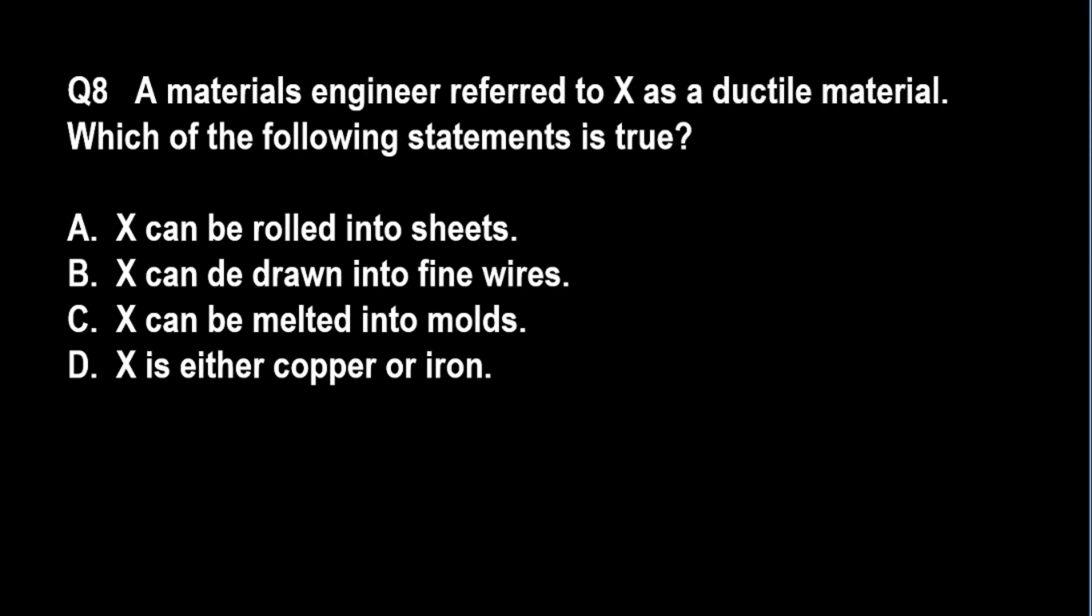Number eight: a materials engineer referred to X as a ductile material. Which of the following statements is true? A: X can be rolled into thin sheets, B: X can be drawn into fine wires, C: X can be melted into molds, and D: X is either copper or iron.